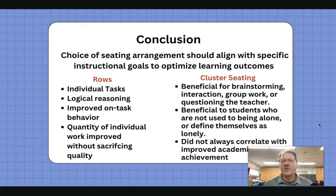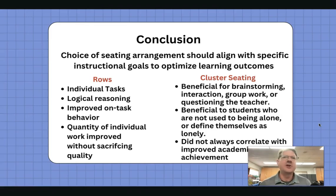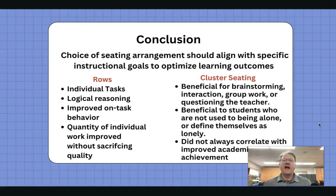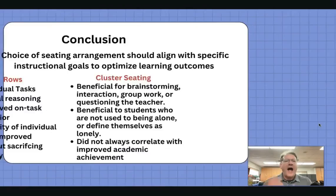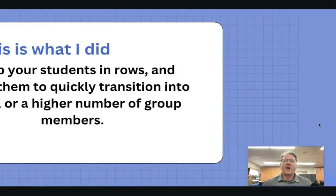In rows, students do better on individual tasks and logical reasoning. Rows showed improved on-task behavior and the quantity of individual work improved without sacrificing quality. Cluster seating is more beneficial for brainstorming, interaction, group work, and questioning the teacher. Clusters also help students who define themselves as lonely or who aren't used to being alone. However, clusters did not always correlate with improved academic achievement. My recommendation: keep students in rows and teach them to quickly transition into pairs or larger groups when needed.